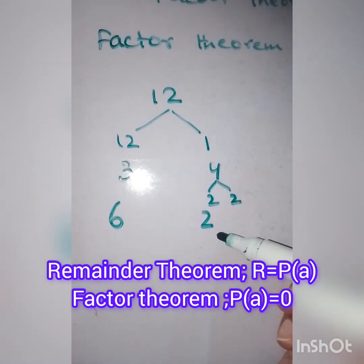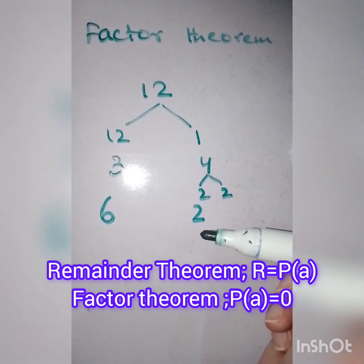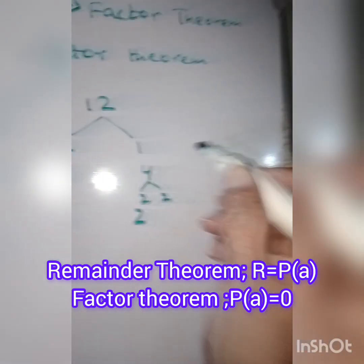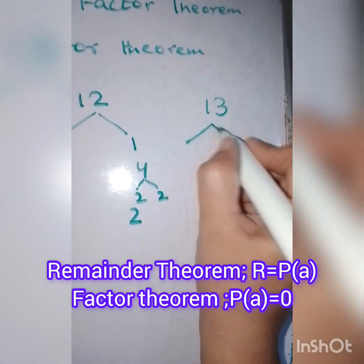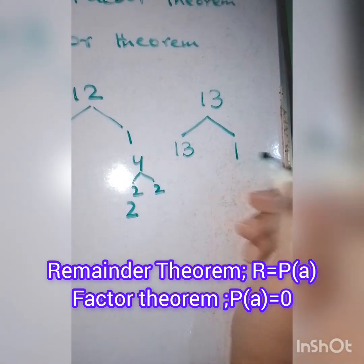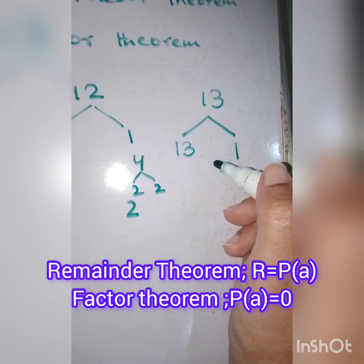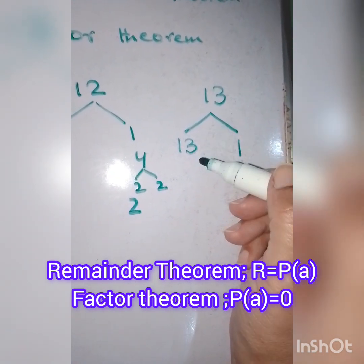On the other hand, if you divide 13, there is only one factor: 13 and 1. Since it's a prime number, you are not going to have other factors.